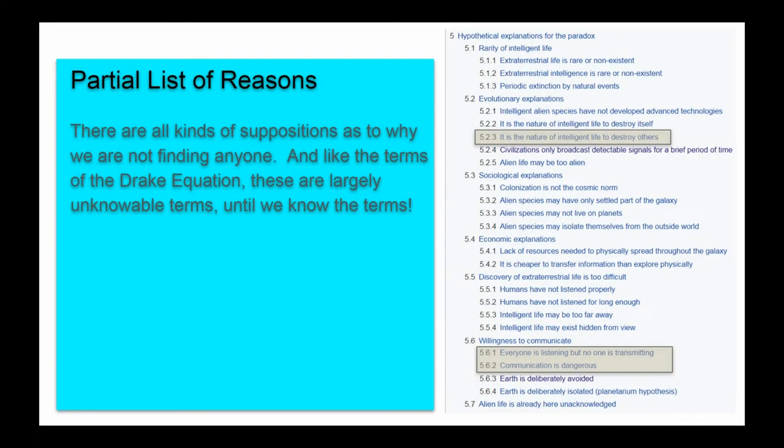Here's a partial list of reasons why we don't find life. You can go through them. You could write books on this. I'm uninterested in recapitulating ground that has already been covered. I do find of interest that it might be the nature of intelligent life to destroy others. Everyone is listening, but no one is transmitting. Communication is always dangerous. We can encapsulate these in the term the dark forest. And rather than spend a lot of time discussing the dark forest, let's have John Cleese explain to us this hypothesis.